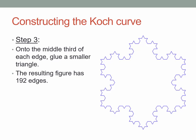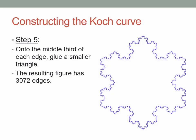You can probably guess what we're going to do in step three: onto the middle third of each of those 48 edges, we glue an even smaller triangle. This begins to look something like a snowflake, and multiplying by four, the resulting figure has 192 edges. Surely you think I'm going to glue on even smaller triangles — and you're right. I glue on 192 even smaller triangles onto the middle third of all the edges at step four, giving 768 edges. Gluing on 768 more triangles gives something even more convoluted with 3,072 edges.